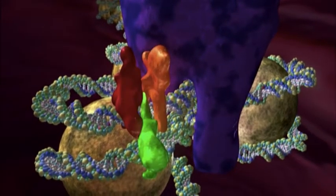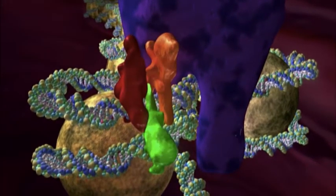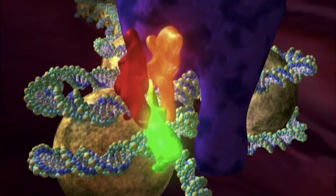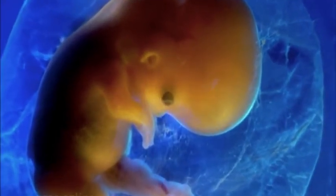Those molecules that can turn genes on play a key role in every aspect of development, including the process that transforms the embryo into a boy or a girl.